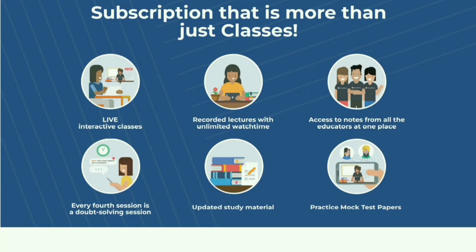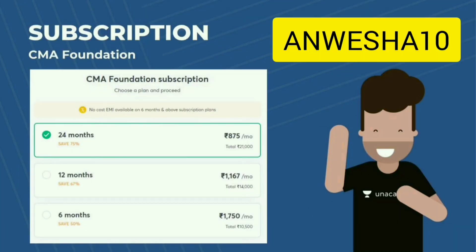These subscriptions are more than just classes — they give you live interactive classes, recorded lectures with unlimited watch time, access to notes, doubt-solving sessions every fourth session, updated study material, and practice mock test papers. You can get subscriptions at 875 rupees per month for 24 months, and likewise for 12 months and 6 months. Use my coupon code ANVESHA10 to avail a 10% discount. Find the link for all these classes in the description box below.